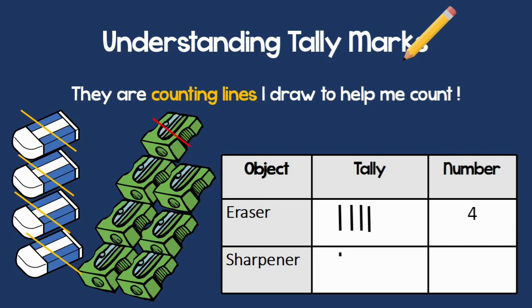Now let's count the sharpeners. I am going to cross each sharpener and write a tally mark. Notice the fifth tally mark — I make a group with each five marks. Five and two make seven.